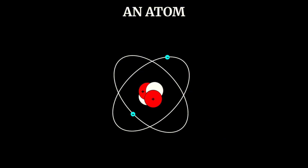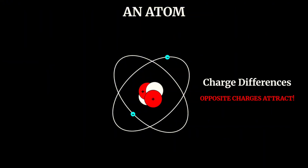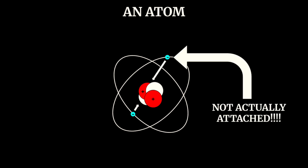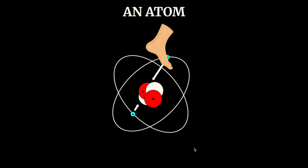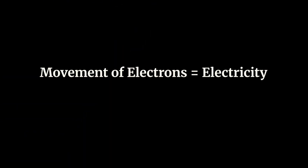In a different video, I explained what electricity actually is, and I totally think you should check that one out. But for now, I'll just refresh you on the basics. In an atom, electrons are held in orbit around a nucleus due to electromagnetic charge differences. But since they're not directly attached to the nucleus, they can be kicked out of their orbitals and move, bringing their charge with them. This movement of electrons is what we call electricity.